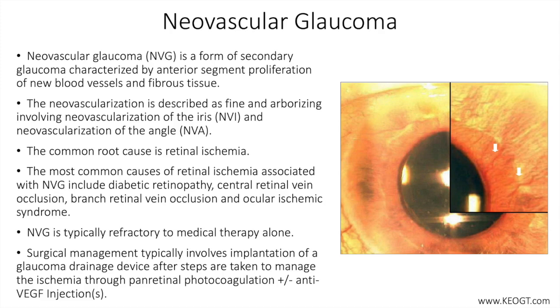As vessels proliferate in the angle, arborizing over the ciliary body and scleral spur, and spreading over the trabecular meshwork, progressive elevation in IOP can be noted related to a decrease in outflow facility.